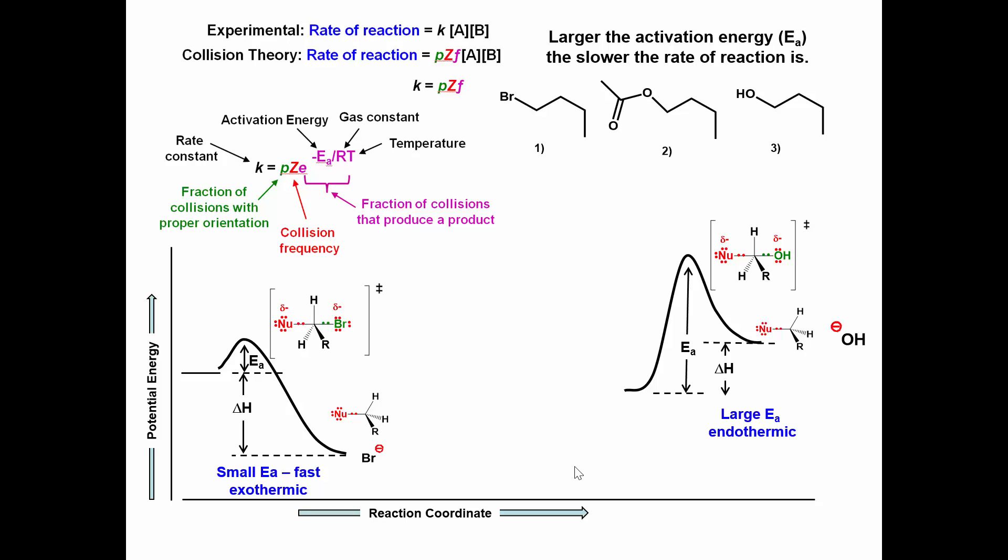In the first reaction bromine is gaining the negative charge. The forming bromide ion is very stable with a negative charge and will readily accept the electrons from the sigma bond. The activation energy for this reaction would be much smaller and would react much faster than 3.